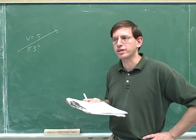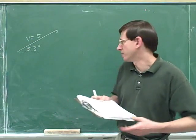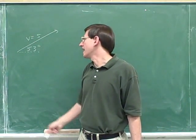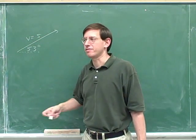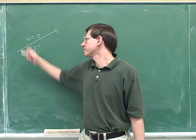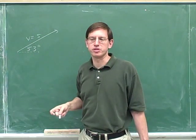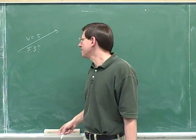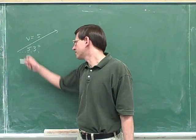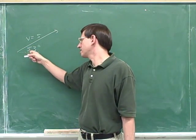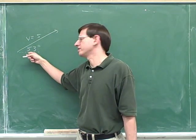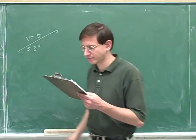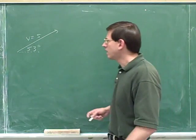Our goal now is to start learning how to break overall vectors into components. Here we have an overall vector V with a length of 5 — if this was velocity it would be 5 meters per second, but for simplicity I'm leaving the units out. This is a vector at an angle of 53 degrees with the horizontal. This dashed line is just for reference to show where the angle is originating.